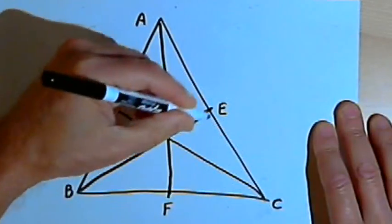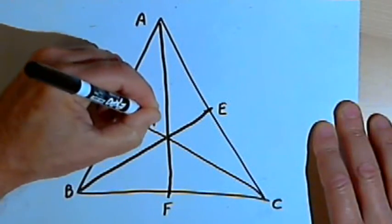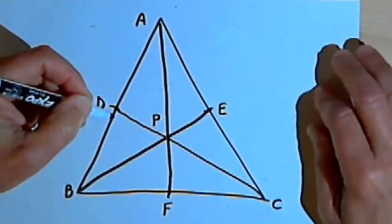Now the place where those three points intersect, I'll label that as point P, and that's called the centroid of a triangle.